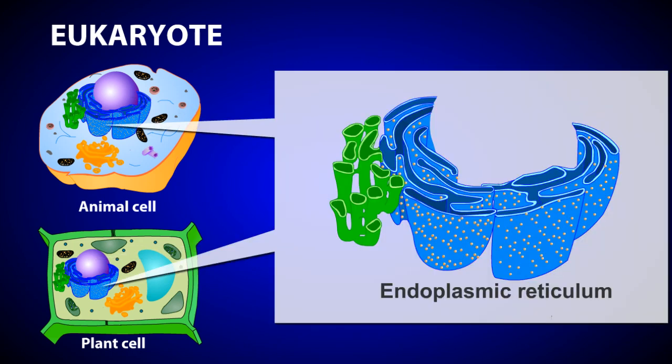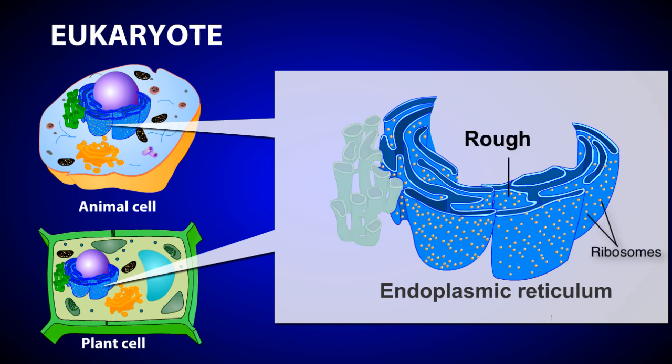The endoplasmic reticulum, or ER, is a membranous network of sac-like structures in the cytoplasm of the cell. The ER is divided into two distinct types based upon structure and function. The rough ER is studded with ribosomes, the location of protein synthesis in a cell. The presence of the ribosomes gives this ER its rough appearance.